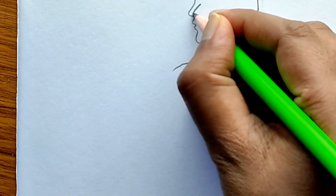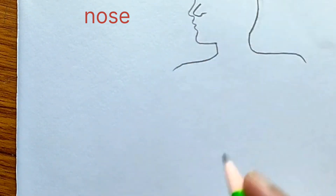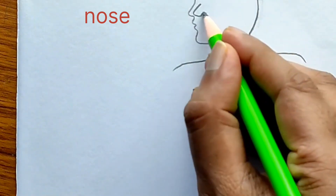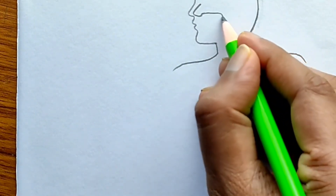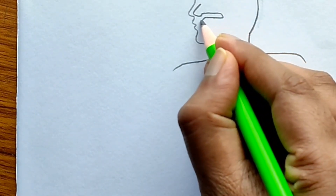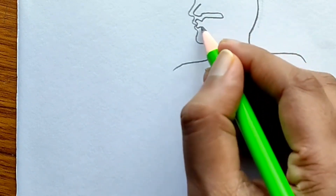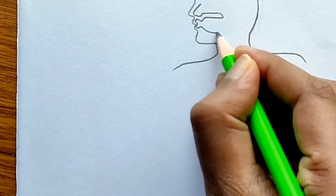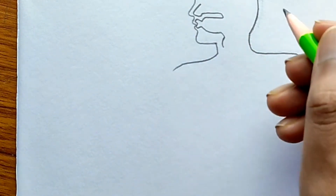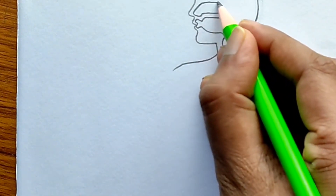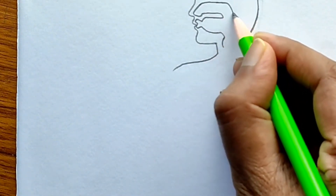This is the external nostril, which we call the nose, and it leads into the internal nostril. The internal nostril opens into what is called the pharynx. In the respiratory system, the pharynx opens into what is called the trachea.